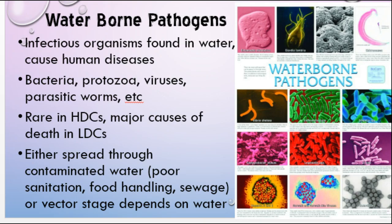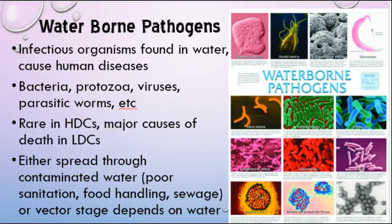Waterborne pathogens are any kind of infectious disease organism found in water, so that could include bacteria, protists, viruses, parasitic worms, all kinds of different things. These are very rare in highly developed countries because a lot of water treatment will remove most of these pathogens, but they're still major causes of death in less developed countries because they don't have as advanced wastewater treatment, and in some cases don't have access to a clean water source or a way to keep their sewage separate from their water source.